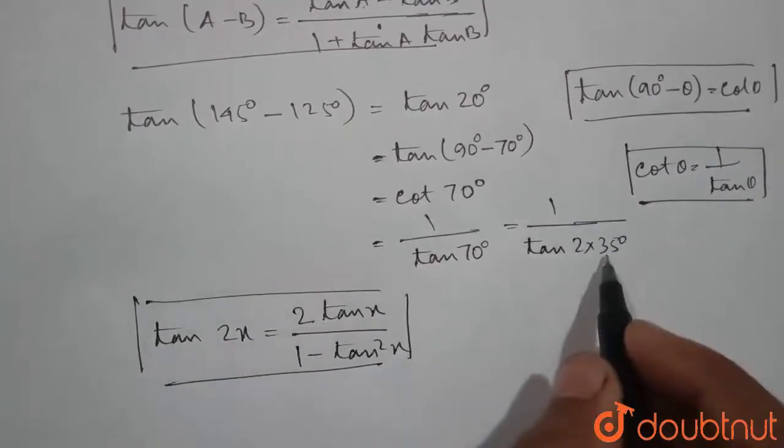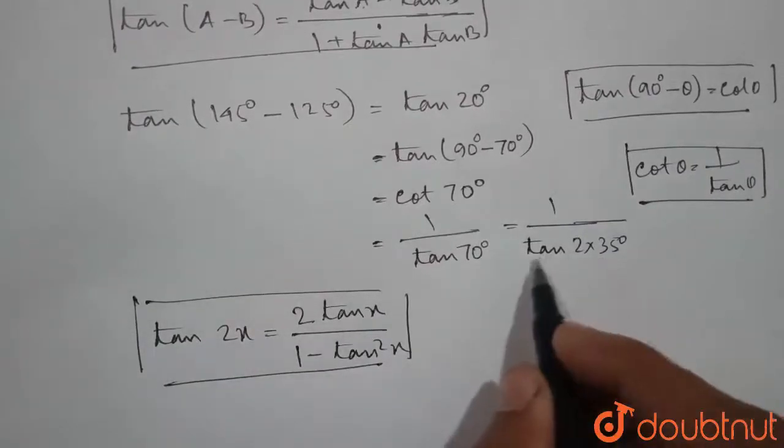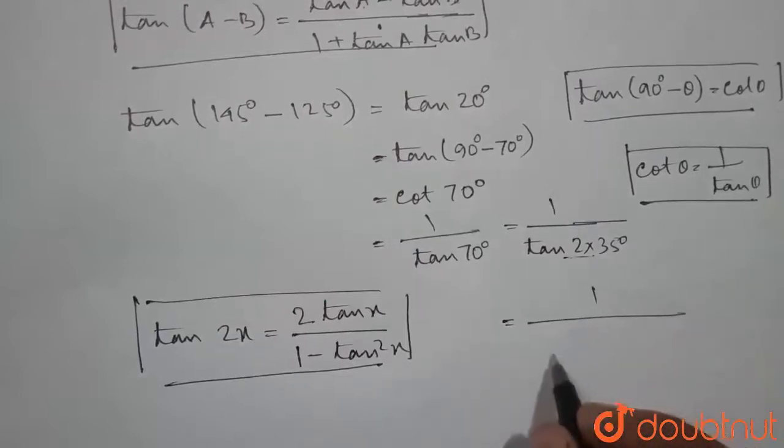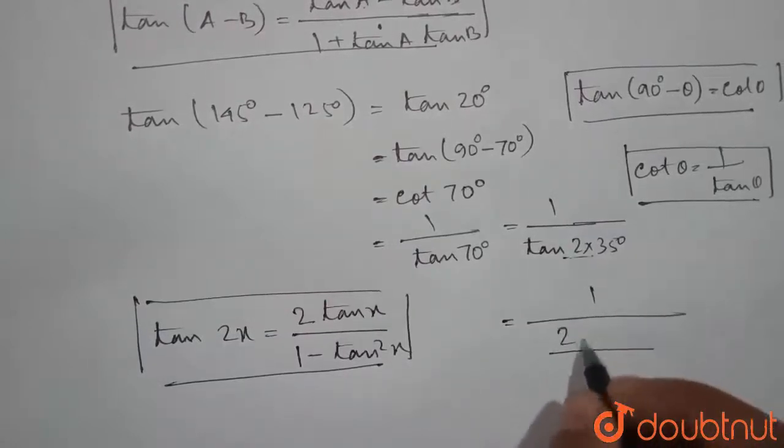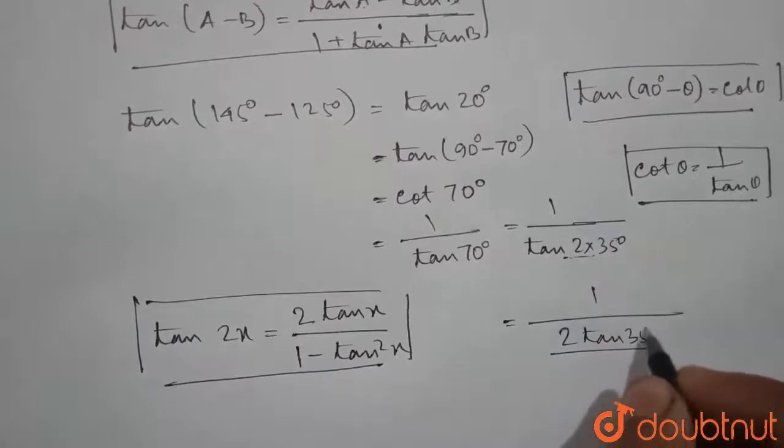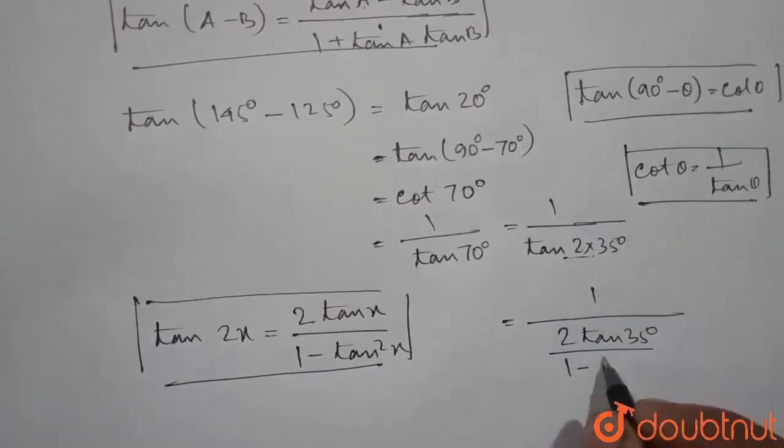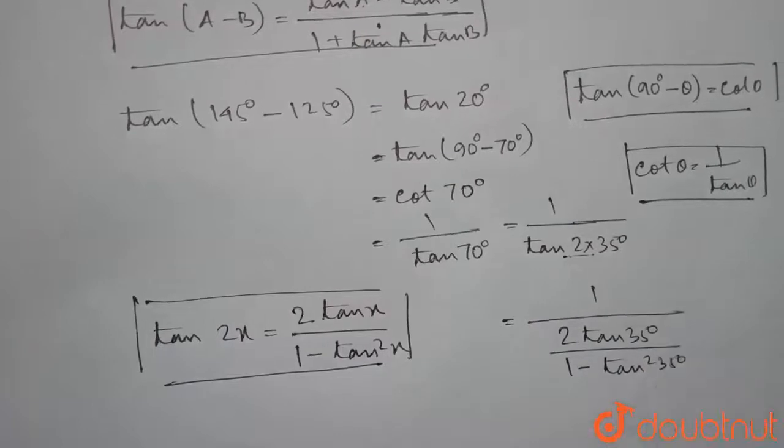Here, the value of x is 35 degrees. So we can write this part as 1 by twice tan of 35 degrees, divided by 1 minus tan squared 35 degrees.